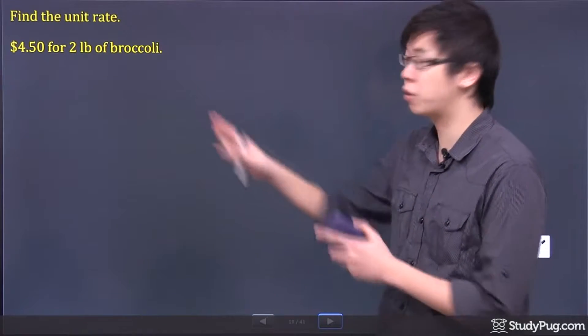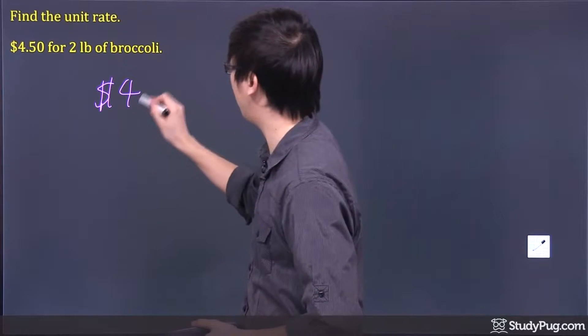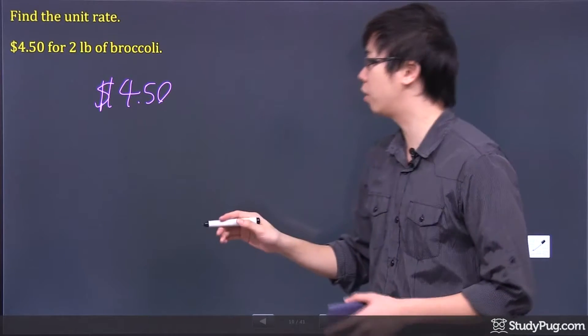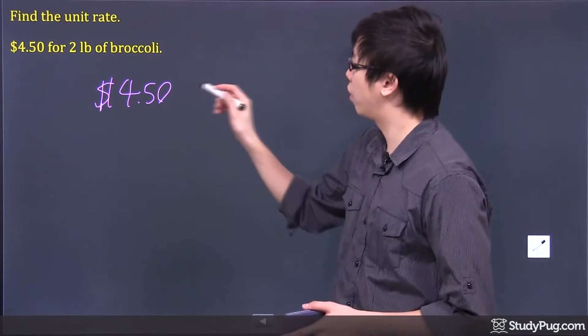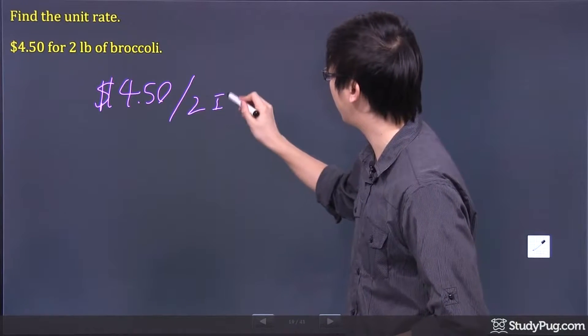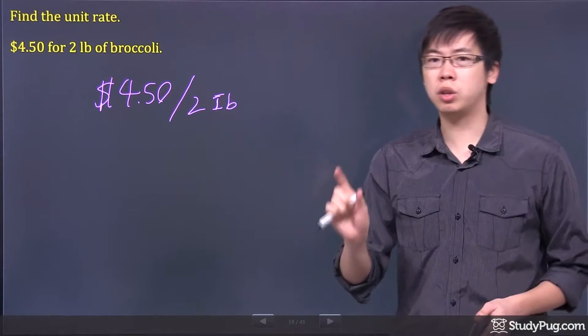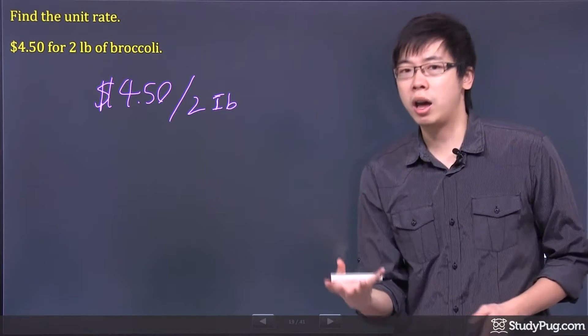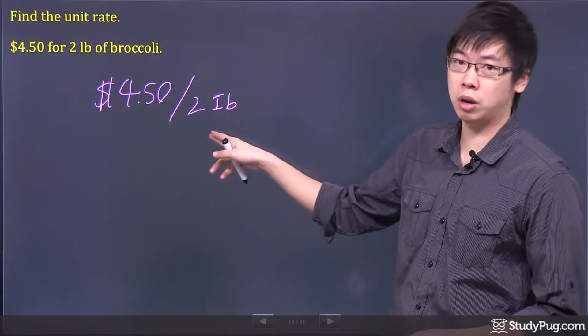Sometimes you go buy some stuff. For example, this question right here, you have to pay $4.50 for every two pounds of broccoli. So, that's your two pounds of broccoli right here. But the unit rate is looking for the price of one unit. So, that's two pounds already.